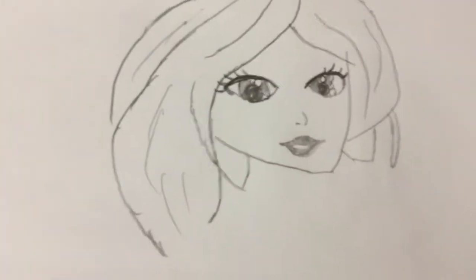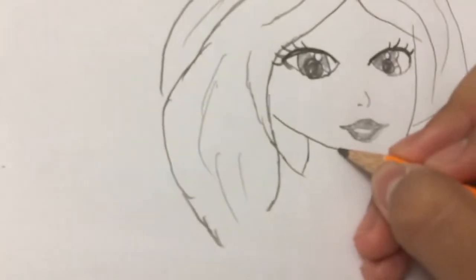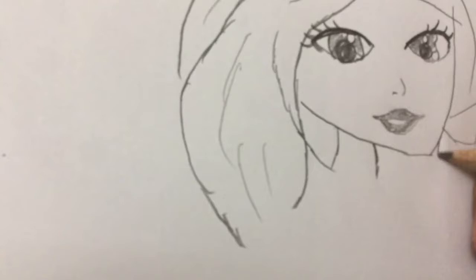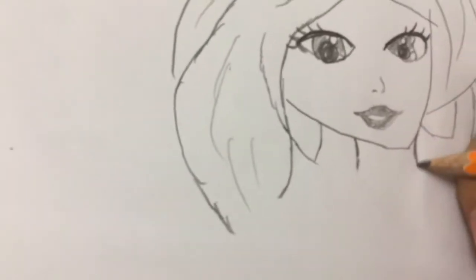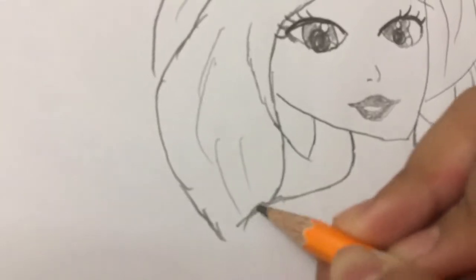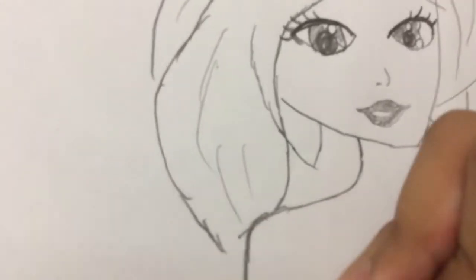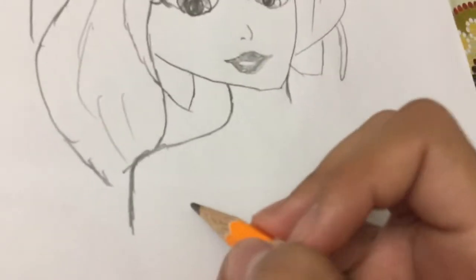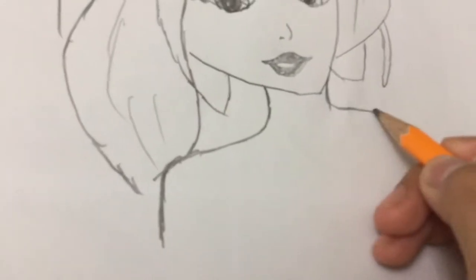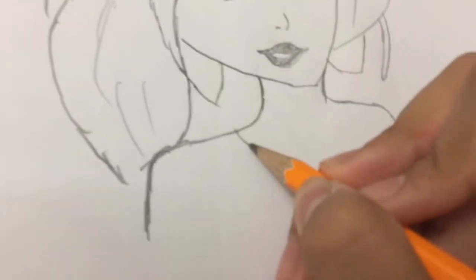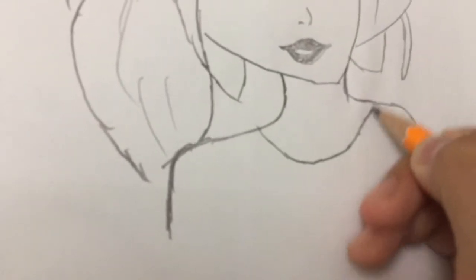Now for her body, we're gonna draw her neck right here, the part of her neck right here, then go down. And there you go. Then for her dress, wait, there you go. She has a necklace right here, that's right here.